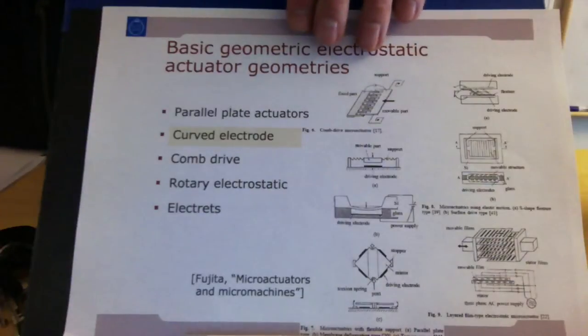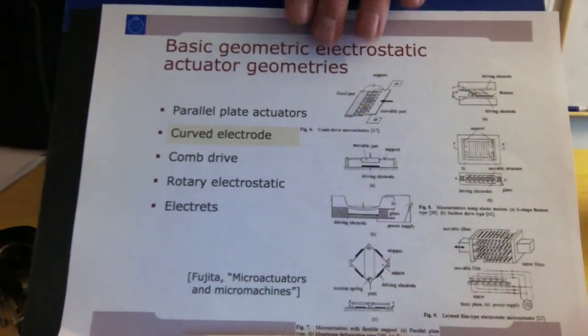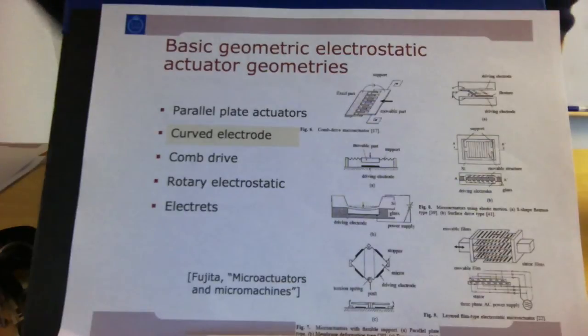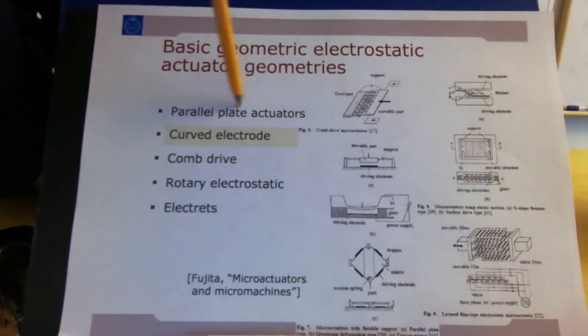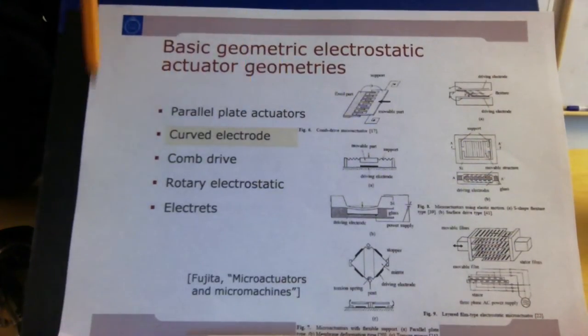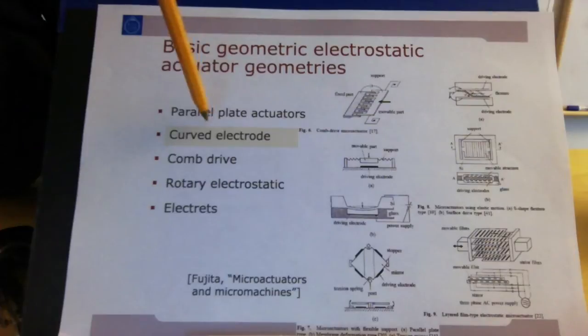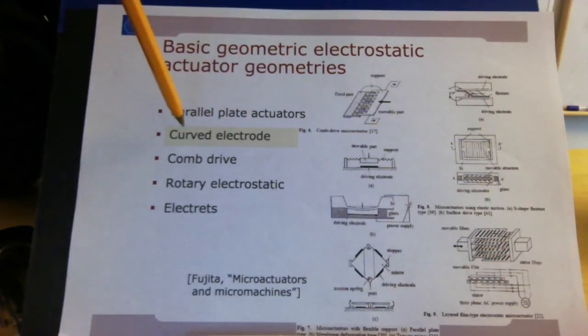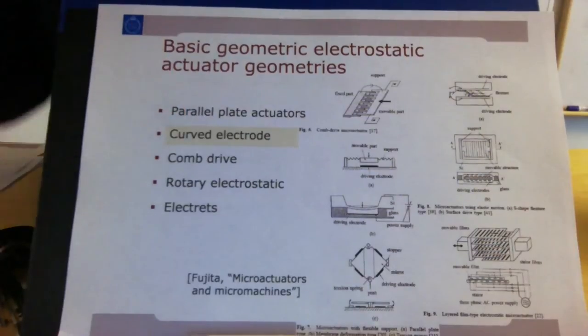Parallel plate electrostatic actuators are only one of many different types that you can think of. It's perhaps easiest to understand. A second type is that of curved electrode actuators, and that is the next example that we're going to look at.